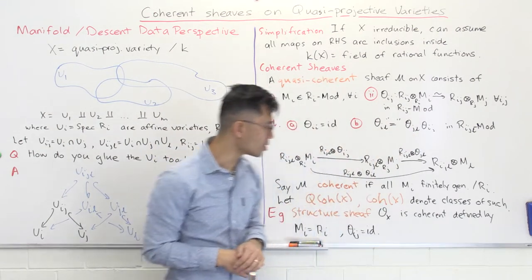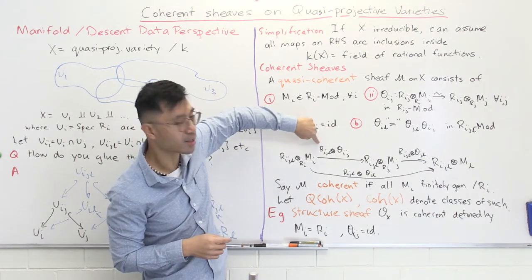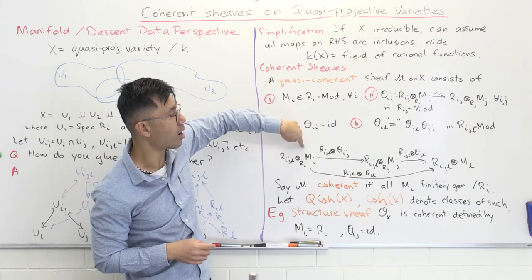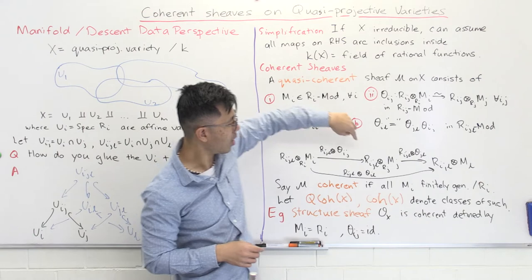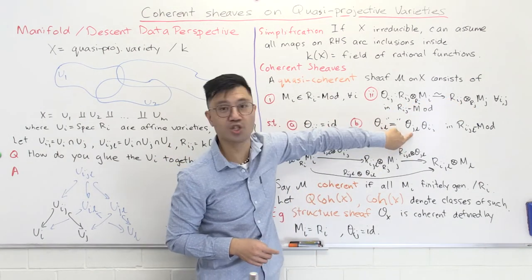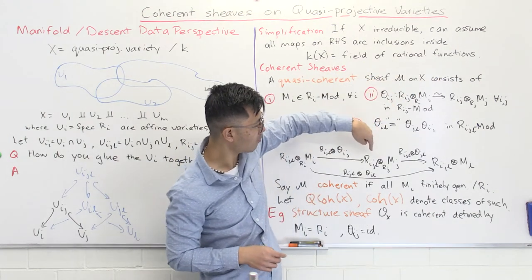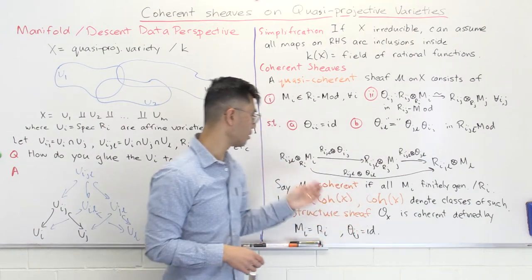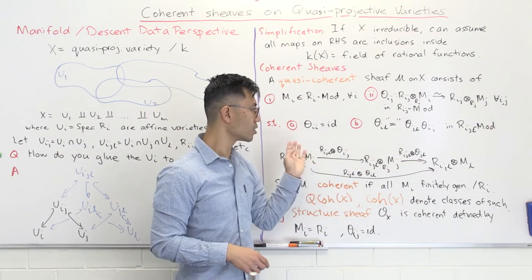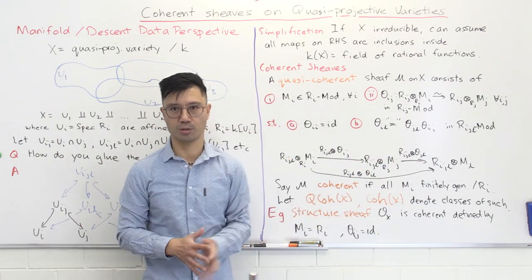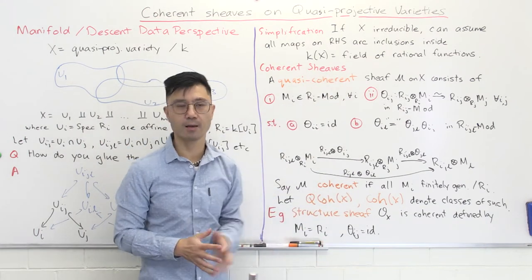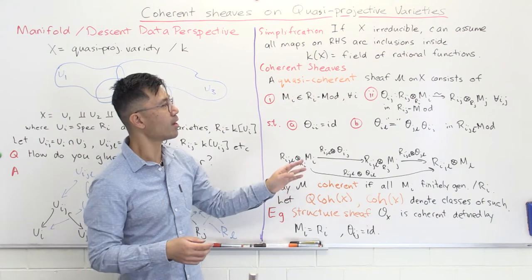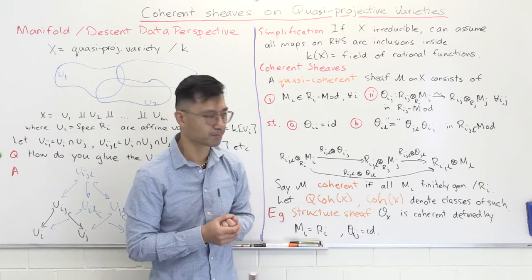Let's see precisely what this means. If you do θᵢⱼ on the triple intersection, you need to tensor up with Rᵢⱼₗ, giving Rᵢⱼₗ ⊗_{Rᵢ} Mᵢ, and then to Rᵢⱼₗ ⊗_{Rⱼ} Mⱼ. Then you do θⱼₗ to go from Rᵢⱼₗ ⊗ Mⱼ to Rᵢⱼₗ ⊗ Mₗ. Or you can go directly via θᵢₗ. This composite map must equal the direct map — this is called the cocycle condition. If you have this cocycle condition on this data, you define a quasi-coherent sheaf. A coherent sheaf is a special type where all modules Mᵢ are finitely generated.